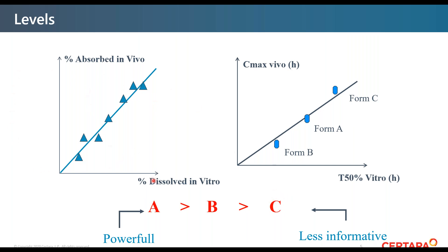In Level A IVIVC, you make a link between in vitro dissolution and in vivo absorption. Each single data point represents a time you observe both in vitro and in vivo — the same one between vitro and vivo — and you can have time scaling. That means you have one link for one formulation. If you use more than one formulation, you try to have the same link between vitro and vivo for all formulations — that is a common IVIVC. In Level C IVIVC, you have a link between one in vitro parameter and one in vivo parameter — for example, Cmax and the time at which you have 50% dissolved, or what you observe at 30 minutes. Each dot represents one formulation, so you use only a restricted set of data per formulation.